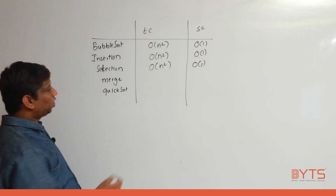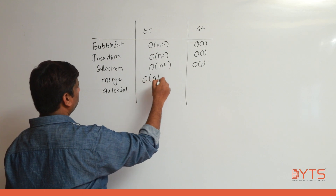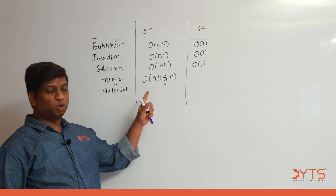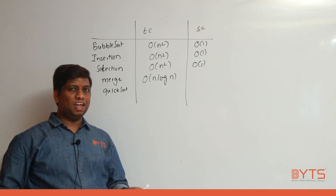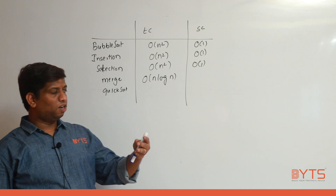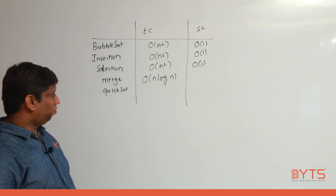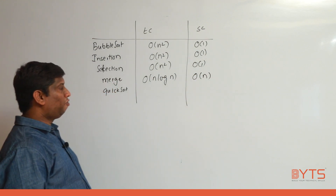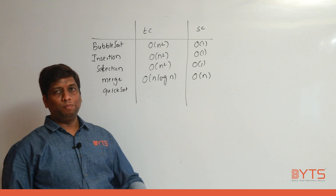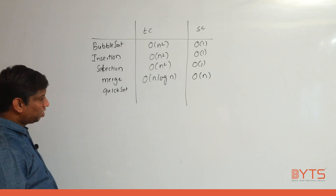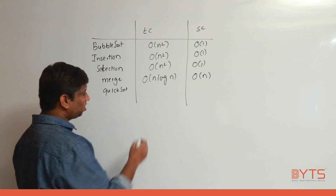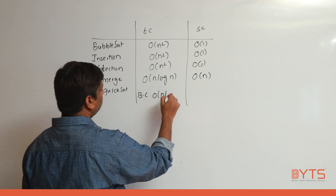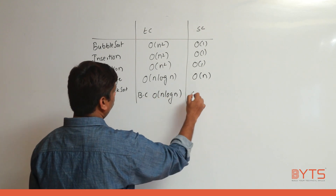Merge sort takes O(n log n) time — because we spend time dividing the array, copying, and recursion. Space complexity is O(n) because we divided and created extra arrays. Quick sort best case: time complexity O(n log n), space complexity O(log n) — because when dividing into exactly two halves, only the stack size of log n is used.